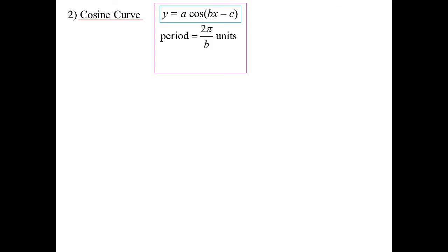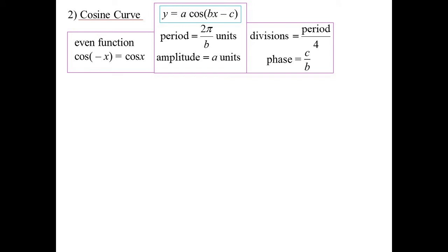So period will still be 2π/b. Amplitude will still be a. I'm still going to mark off my divisions every period/4. Phase will still be c/b. Cosine, of course, is an even function. So we'd have cosine of negative x is equal to cosine of x.